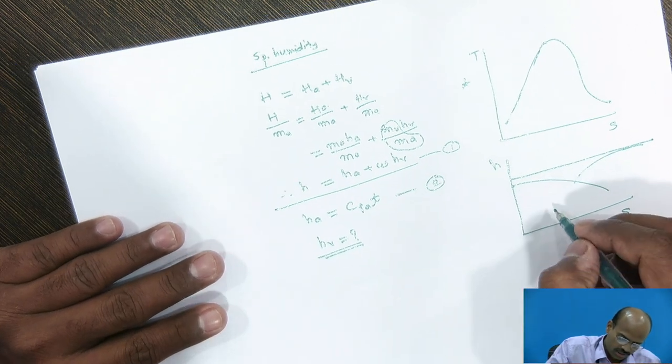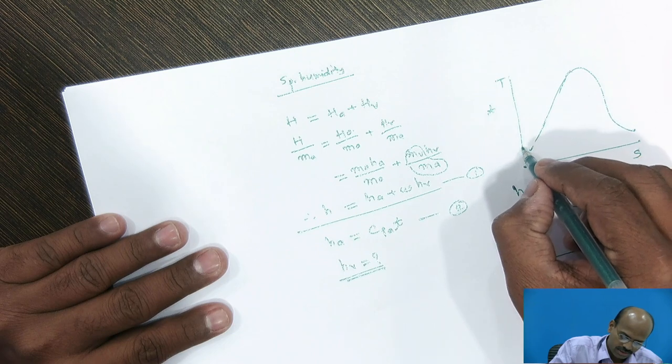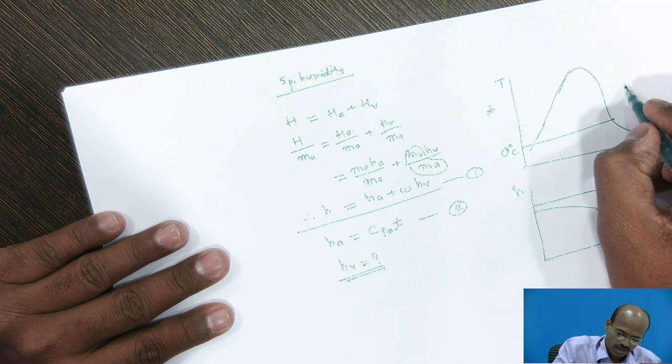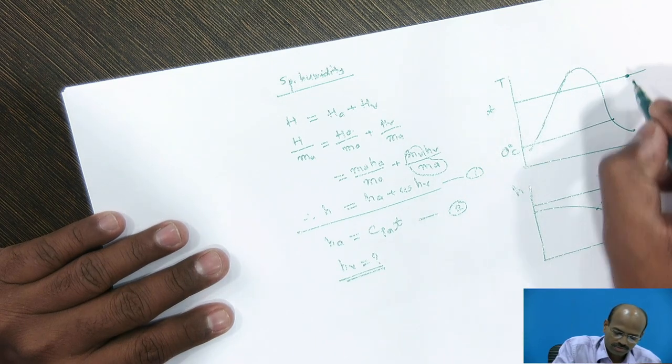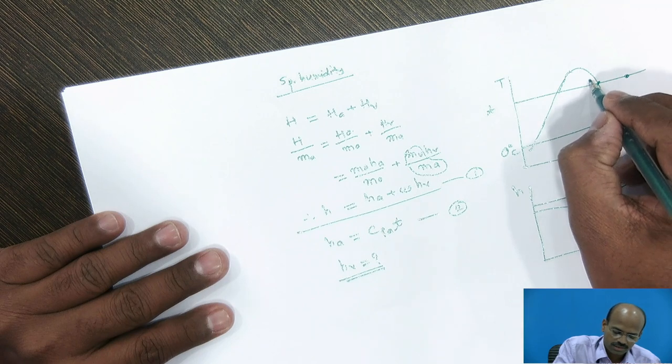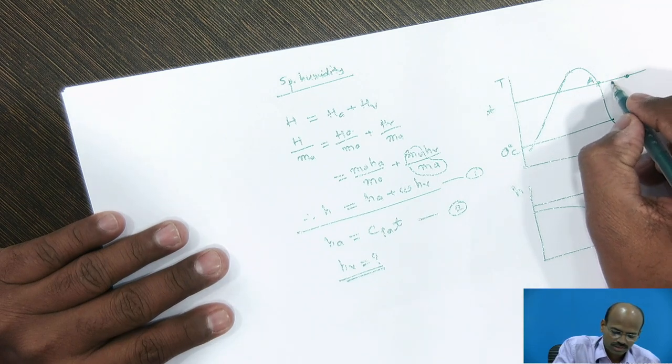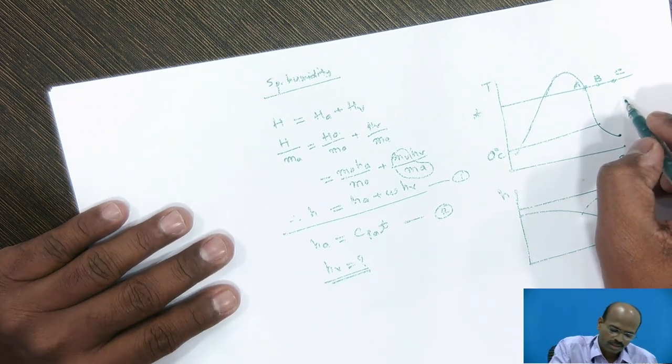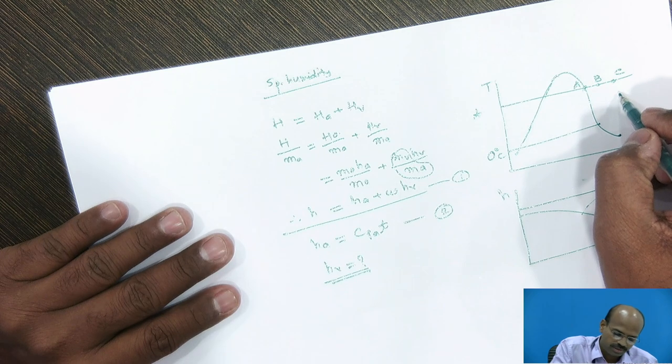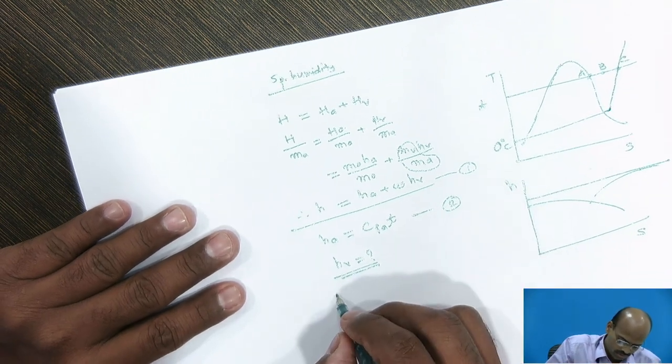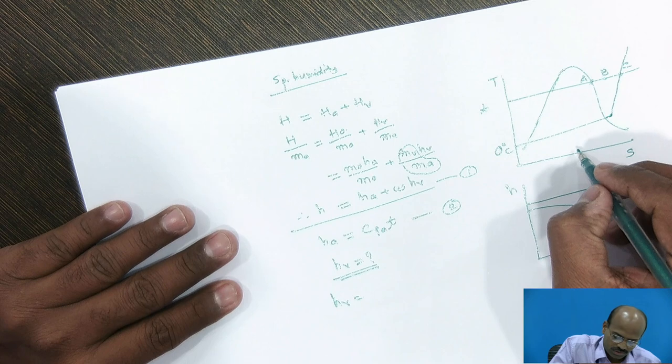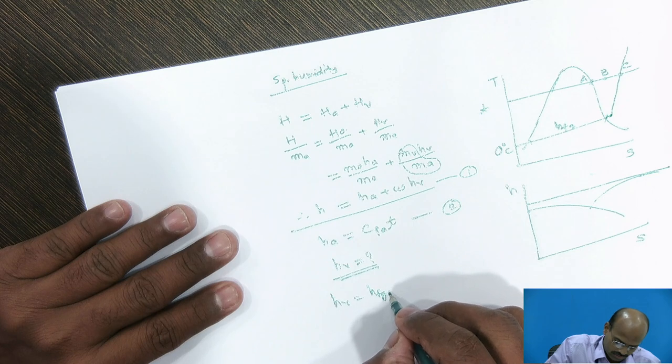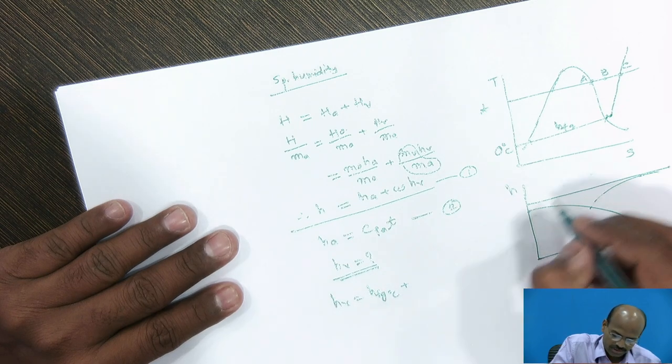So, what I can do? I can consider the reference temperature for the water vapor as 0 degree Celsius and the enthalpy of water vapor instead of taking it as a dry air, that is suppose capital A, superheated B or state C. I can derive the general relation for the water vapor. So, Hv is equal to Hfg, this is the latent heat at 0 degree Celsius,